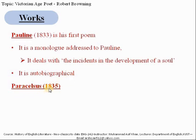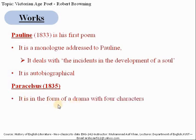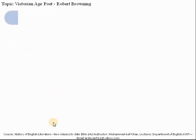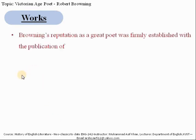The second important work is Paracelsus, published in 1835. It is in the form of a drama with four characters, and this poem is also the story of incidents in the development of the soul.